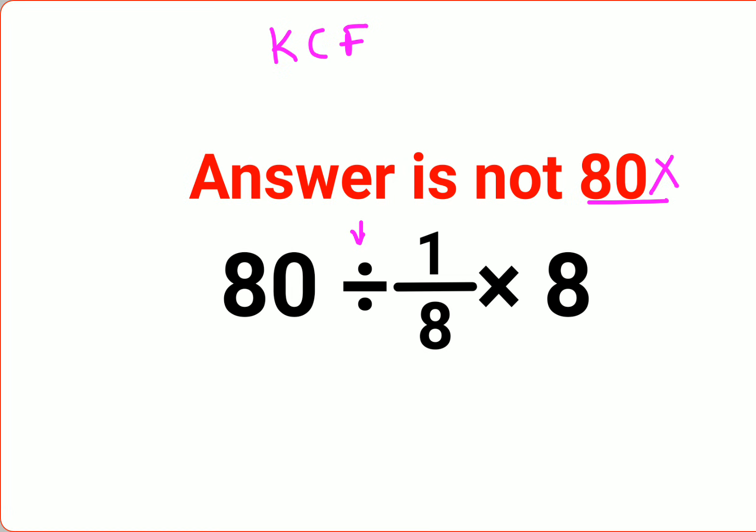Now before going ahead with that, first please understand a lot of people did this: 1/8 × 8 is just 1, so they thought that 80 divided by 1 should get them 80, which is incorrect.